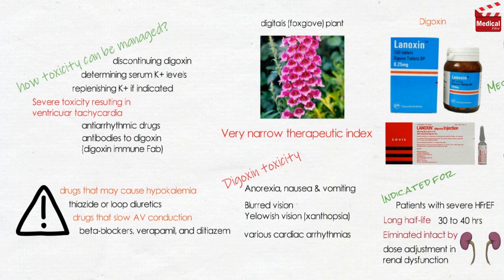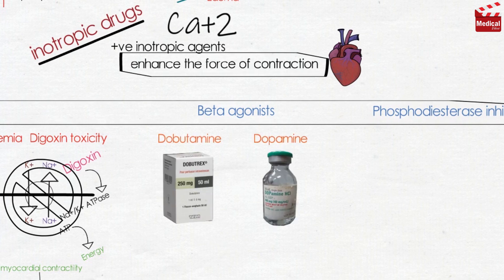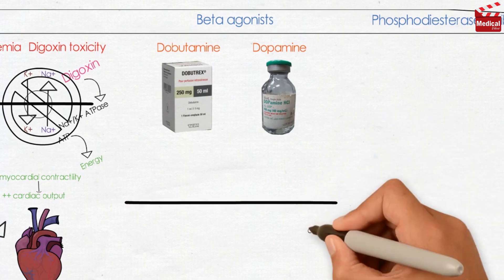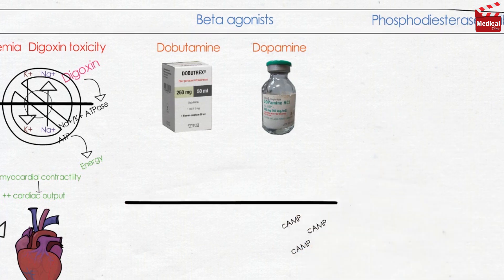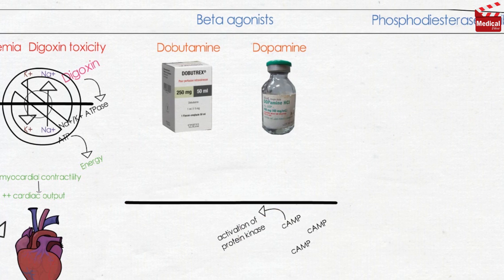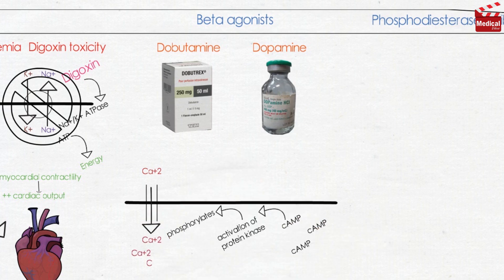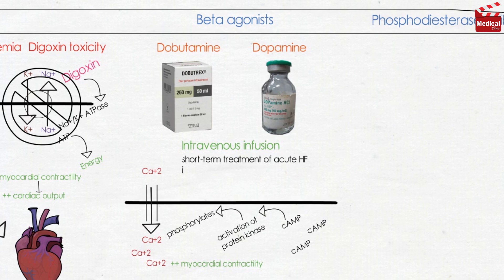The second group of inotropic drugs is beta-agonists, such as dobutamine and dopamine. They improve cardiac performance by causing positive inotropic effects and vasodilation. Dobutamine is the most commonly used inotropic agent other than digoxin. Beta-adrenergic agonists lead to an increase in intracellular cyclic adenosine monophosphate (cAMP), which results in activation of protein kinase. Protein kinase then phosphorylates slow calcium channels, increasing entry of calcium ions into myocardial cells and enhancing contraction. Both drugs must be given by intravenous infusion and are primarily used in the short-term treatment of acute heart failure in the hospital setting.